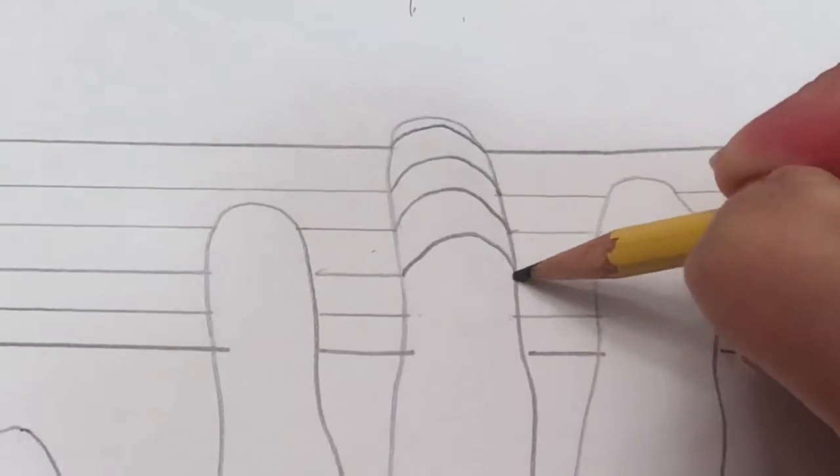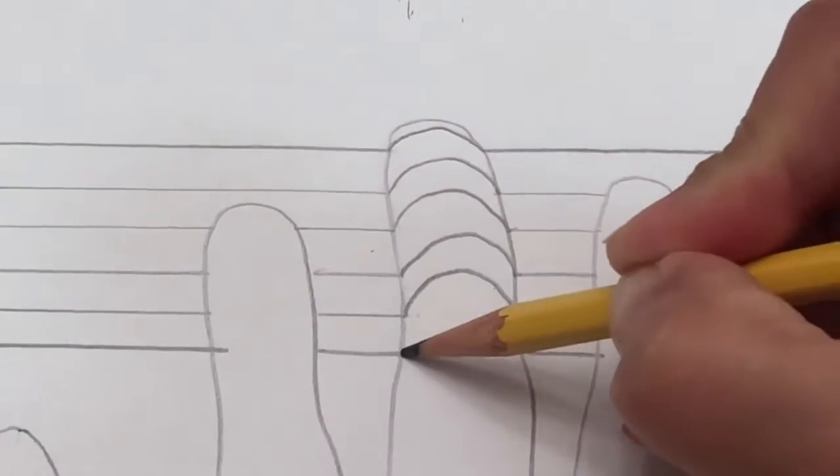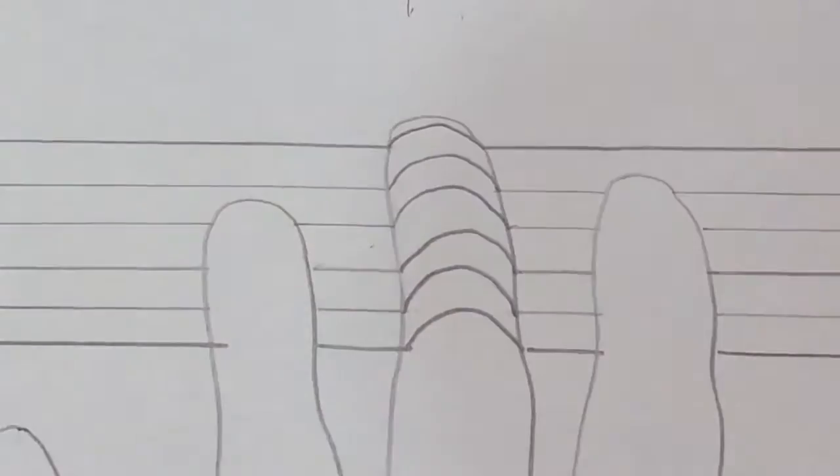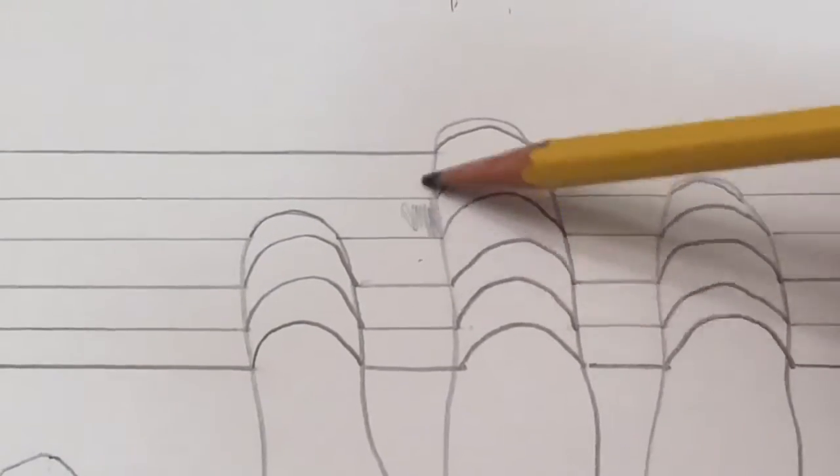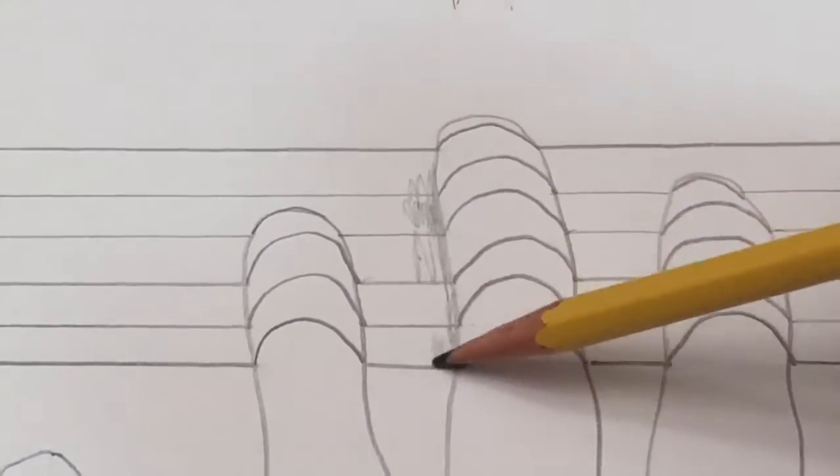Then to connect the line in the areas of the hand, you're going to draw a C shape or a really exaggerated curve going up.